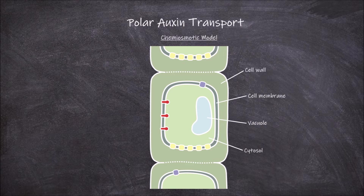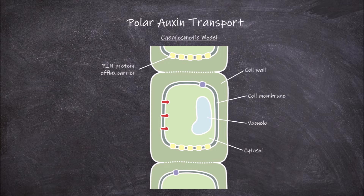These plant cells have several membrane proteins that are important for the steps involved in polar auxin transport between cells. One type of membrane protein important in this model are PIN proteins. PIN proteins function as auxin efflux carriers, and these PIN protein efflux carriers are located primarily on the basal end of each cell.